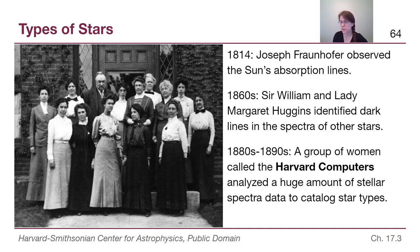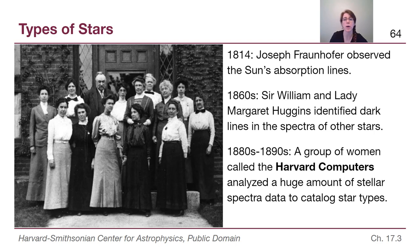This might seem like a pretty impressive feat, but imagine doing that same thing — but instead of using the big bright Sun, you do it for a single tiny star in the nighttime sky. It took 50 years for someone else to be able to do that, but Sir William and Lady Margaret Huggins identified dark lines in the spectra of other stars and recognized that other stars have very similar patterns to the Sun but are not identical.